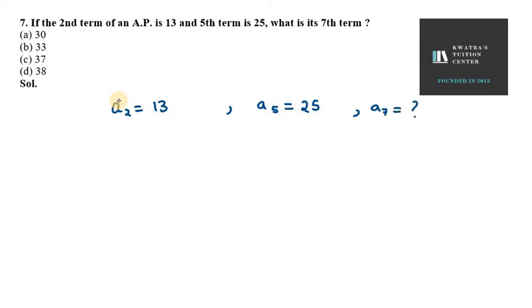So now in this case, we know that we can define A2 with the help of AN formula, that is a plus (n-1)d. So in this case, we can apply the same. So we have n as 2, so it will be 2 minus 1, it will be 1d equals 13. So this is my first equation. Now second equation from A5, A5 using this equation again can be written as a plus 4d equals 25. This is my second equation.